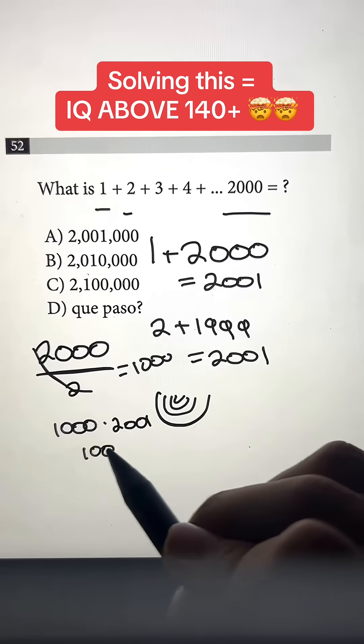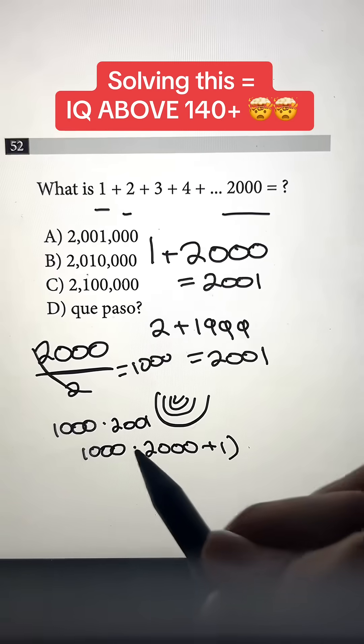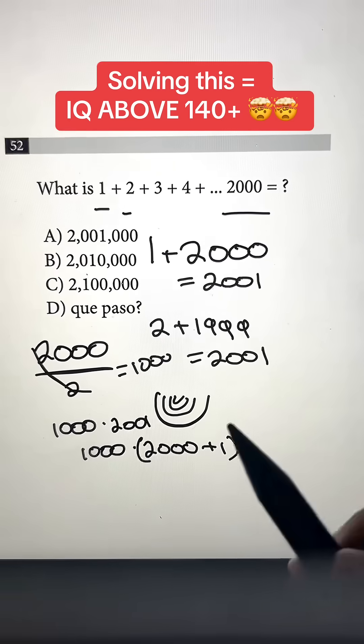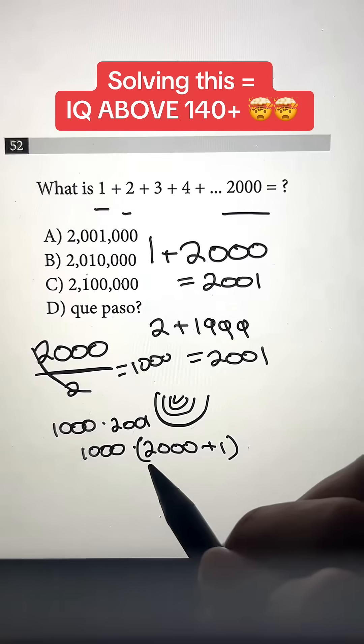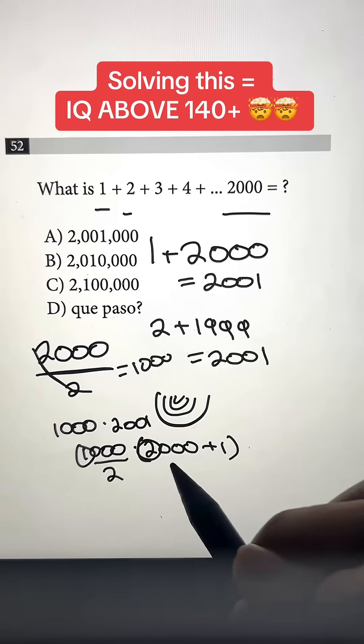So instead we're going to do 1,000, which is the number of pairs, times 2,000 plus 1, which is going to equal to 2,001. And when we do this, all we have to do is 1,000 times 2,000. And we just take the first numbers 1 and 2, and then we add up all the zeros behind it.